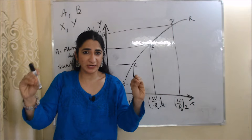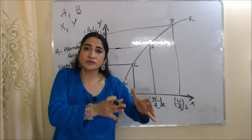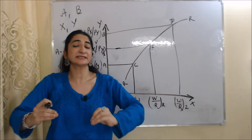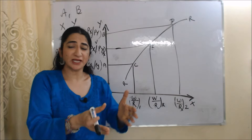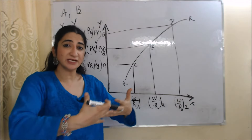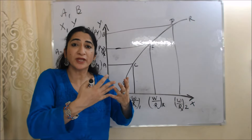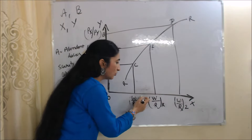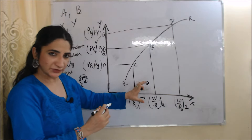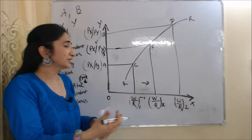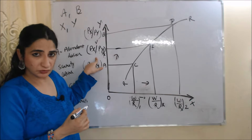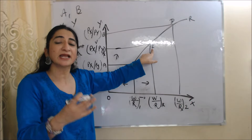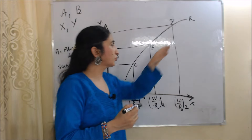As international trade starts, country A increases the production of labor intensive goods X but reduces the production of capital intensive goods Y, because country A has abundance of labor and scarcity of capital. As country A increases the production of X, it increases the demand for labor. As labor demand increases, wage rate also increases — in country A wage rate increases from W/R_1 to W/R*. As wage rate increases, price of labor intensive goods X also increases, so country A after trade reaches equilibrium point E.